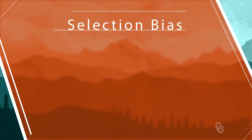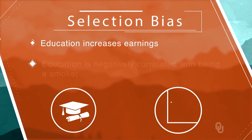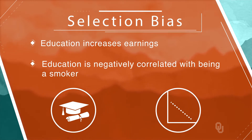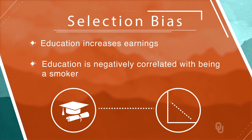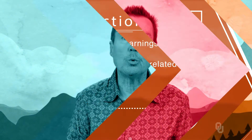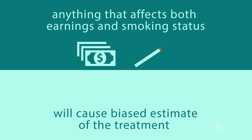We know that education increases earnings, and we also know that education is negatively correlated with being a smoker. So it's quite likely that educational status is driving the smoking-earnings correlation in the data. If this is true, telling a high school dropout that stopping smoking will raise their wages is very unlikely to be true. Anything that affects both earnings and smoking status will cause the simple comparison of outcomes to be a biased estimate of the treatment effect.